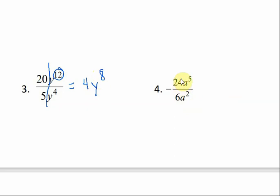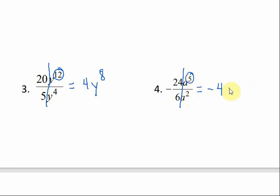Same thing here. Let's look at the coefficients first. I have a negative 24 divided by 6. So 24 divided by 6 is 4, so that would be a negative 4. And then a to the fifth divided by a squared: if I subtract 2 from 5, I get 3, and it's going to go on top. So a to the third.